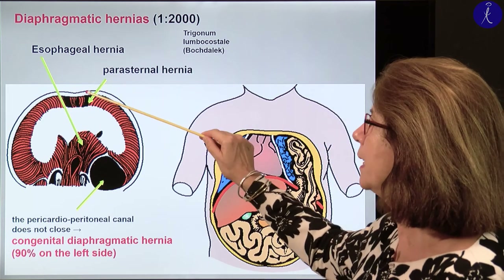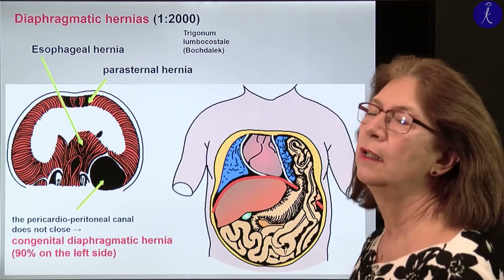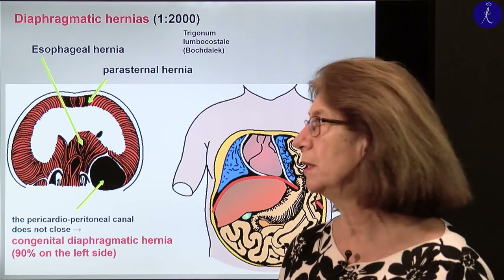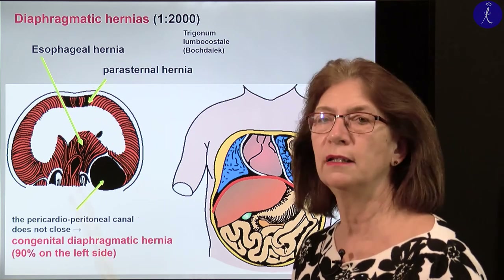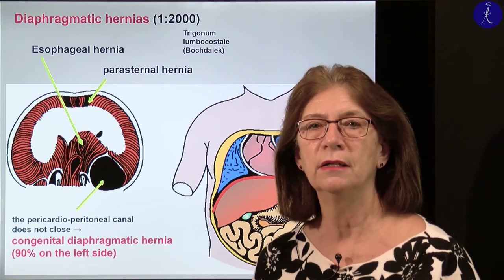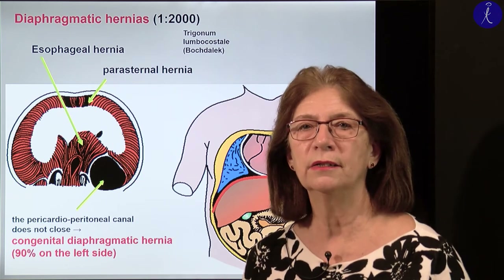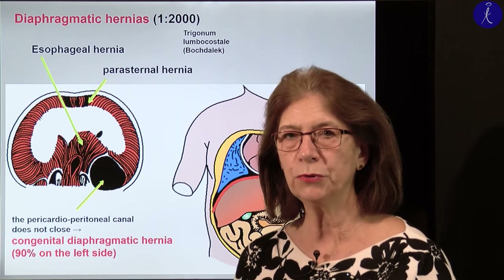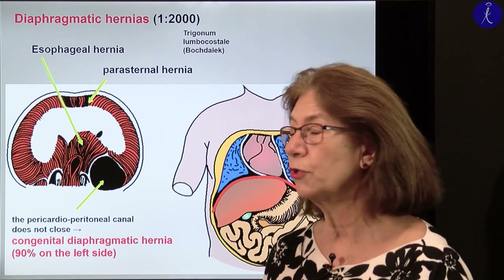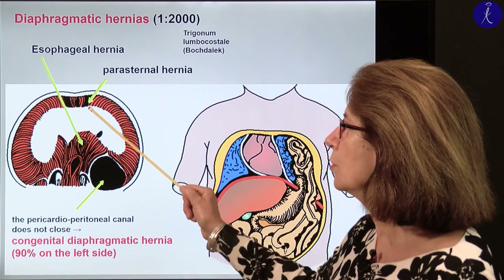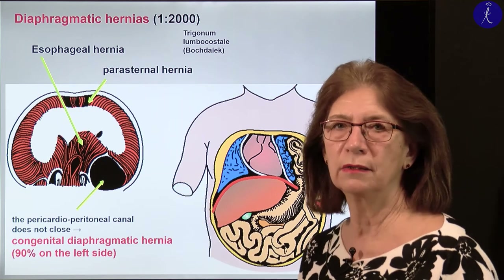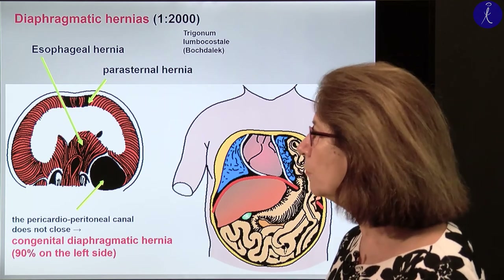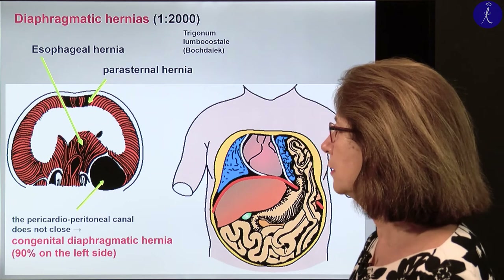We may have a parasternal hernia. This is at the territory between the sternal and the costal part, where the internal thoracic artery goes through and forms the superior epigastric artery. This is usually a smaller hernia and usually doesn't cause major problems.